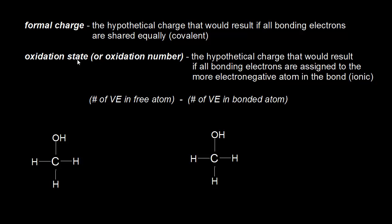Both formal charge and oxidation states are ways of counting electrons, and they're both very useful concepts. Let's start with formal charge. One definition for formal charge is the hypothetical charge that would result if all bonding electrons are shared equally. Let's go down to the dot structure on the left here, which is the dot structure for methanol, and let's assign a formal charge to carbon.